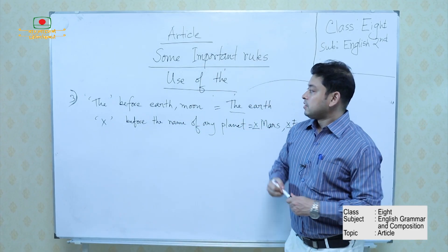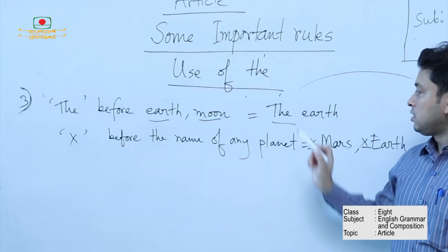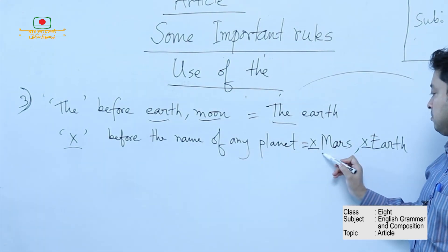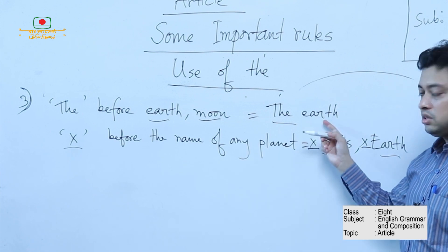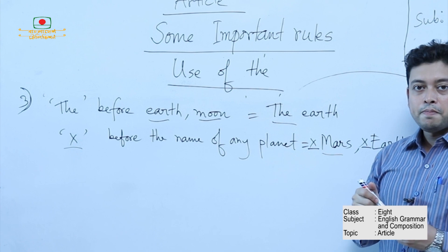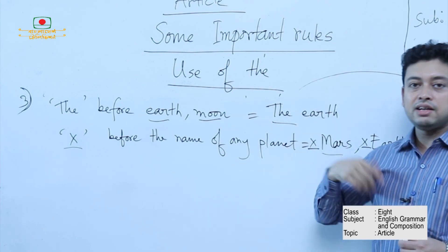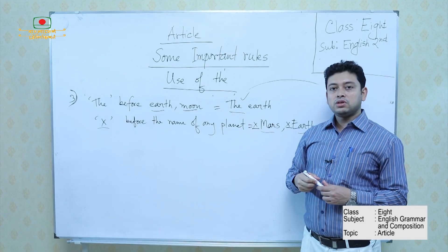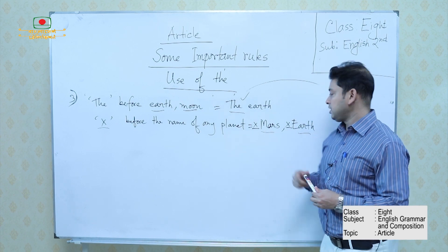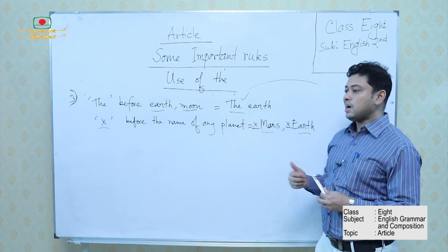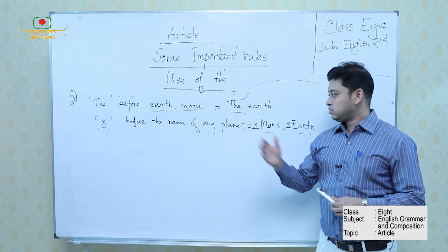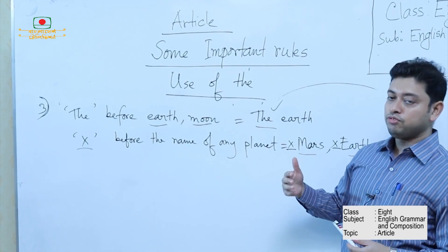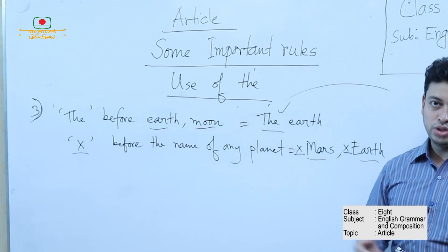THE is used before earth or moon — 'the earth.' However, no article is used before the name of a planet. The distinction is: when I say 'the earth' I am relating myself to it as my living place. But when talking about earth as a planet — 'Earth is the third closest planet' — no article is used. So we use THE when referring to earth as our world, and no article when referring to it as a planet.